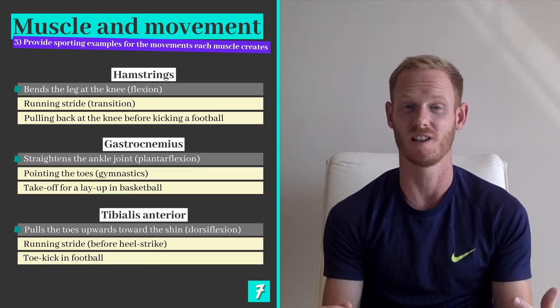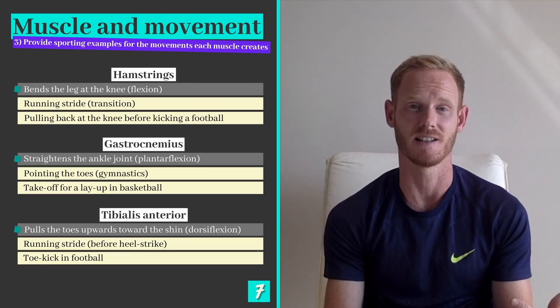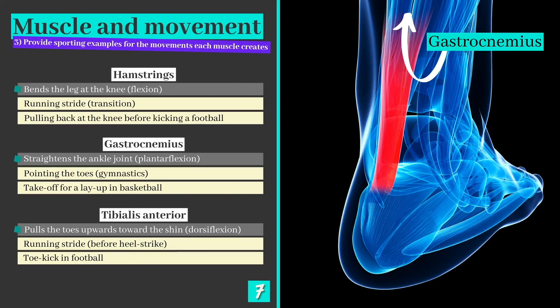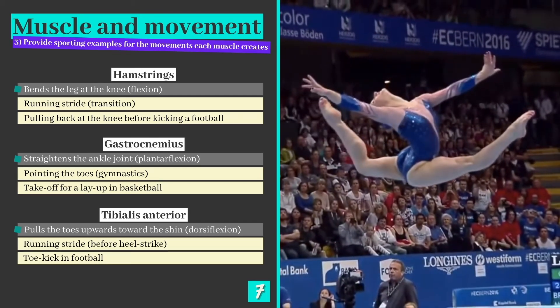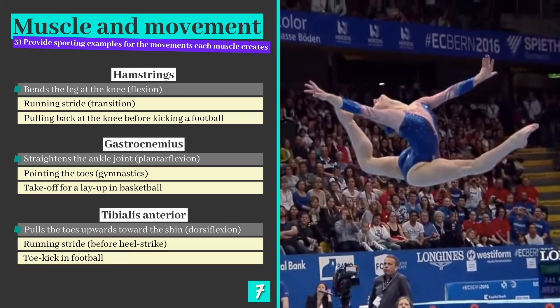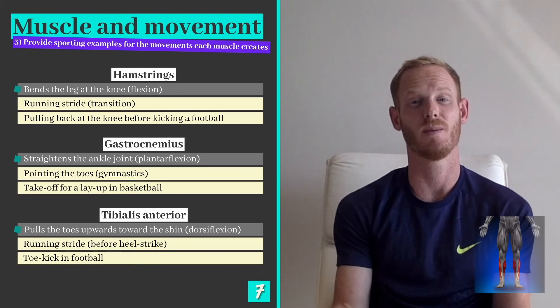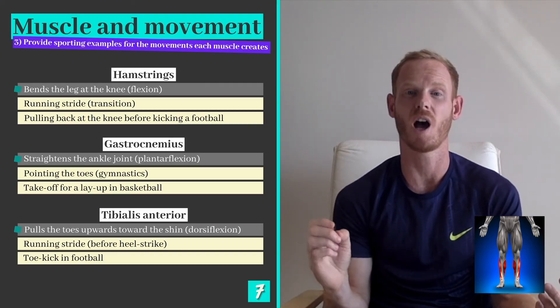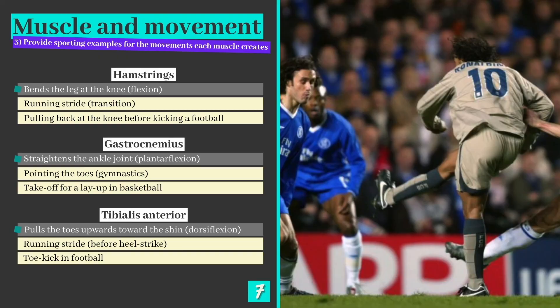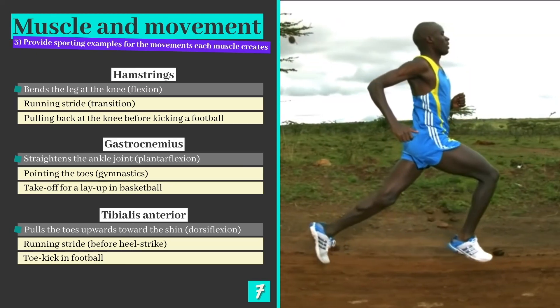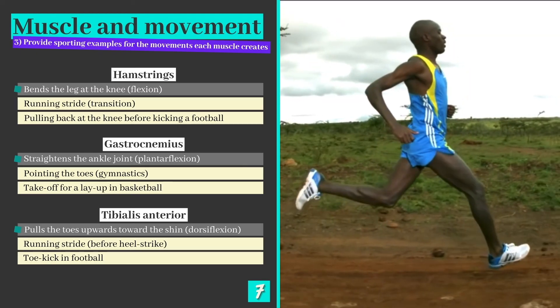Our final pair of muscles are the gastrocnemius and tibialis anterior. The gastrocnemius pulls on the Achilles tendon, which is attached to the base of the foot, and enables plantar flexion or the straightening of the ankle joint. Pointing the toes in gymnastics or taking off for a layup in basketball are great examples. In contrast, the tibialis anterior pulls the foot upwards, creating dorsiflexion at the ankle joint. The muscle contracts when toe-kicking in football and also helps to raise the toes during the running stride.